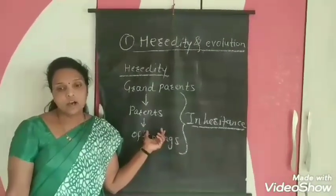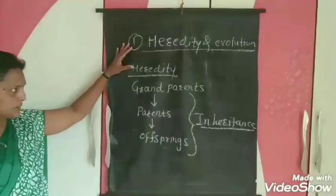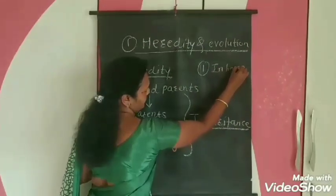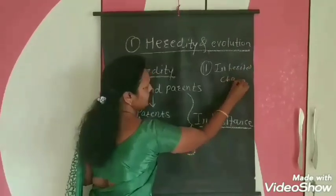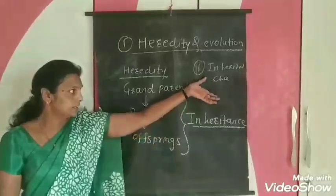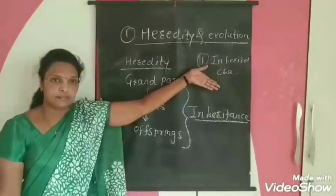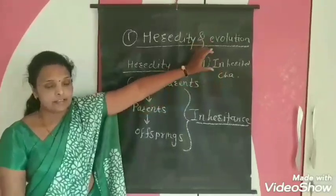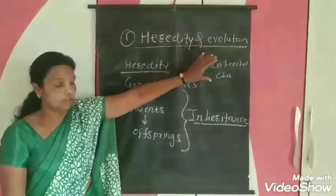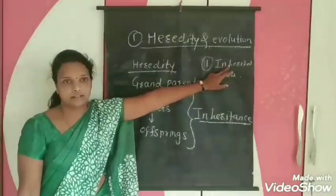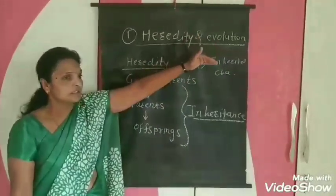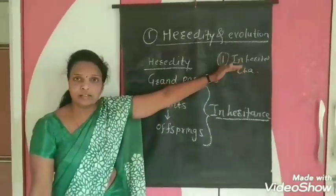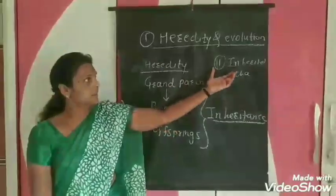Now let us study the types of characters that come under the offsprings. There are two types of characters. The first one is inherited characters. For example, if parents' eyeball color is black, their offspring's eyeball color is also black — that is an inherited character. Similarly, if parents' height is more, their offspring's height is also more. Tallness, skin color, eyeball color, hair color, and hair length — these characters come from parents and are called inherited characters.